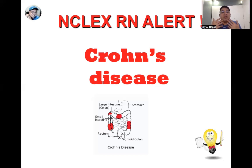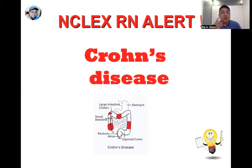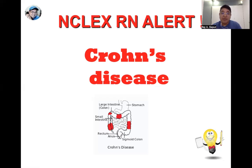Common risk factors include a genetic basis and smoking — smokers are three times more at risk of developing Crohn's disease. Signs include fever due to inflammation, diarrhea that can be bloody, mucoid, and may contain fats, along with weight loss. Take note: in Crohn's disease, the pain is usually in the right lower quadrant of the abdomen.